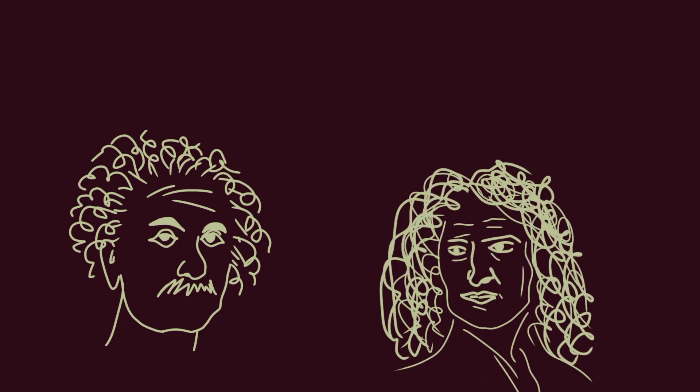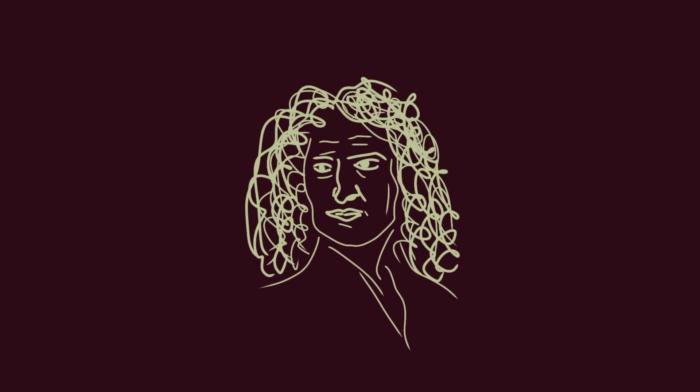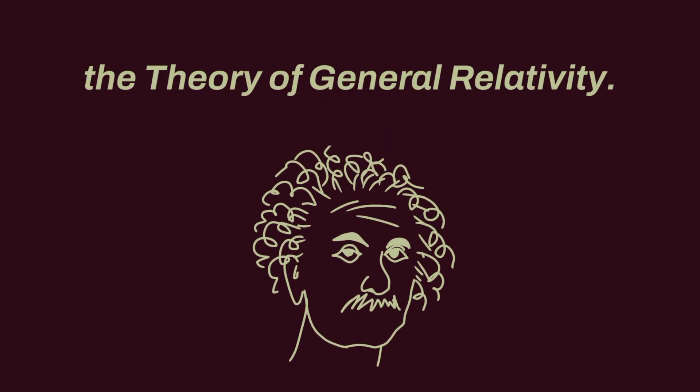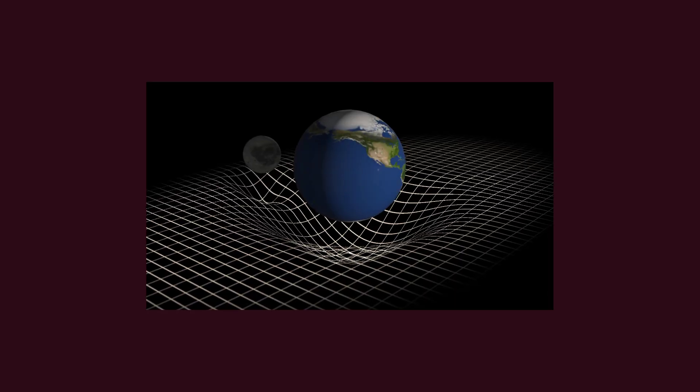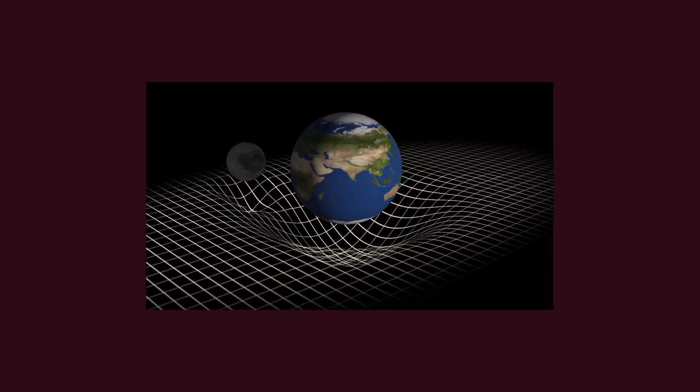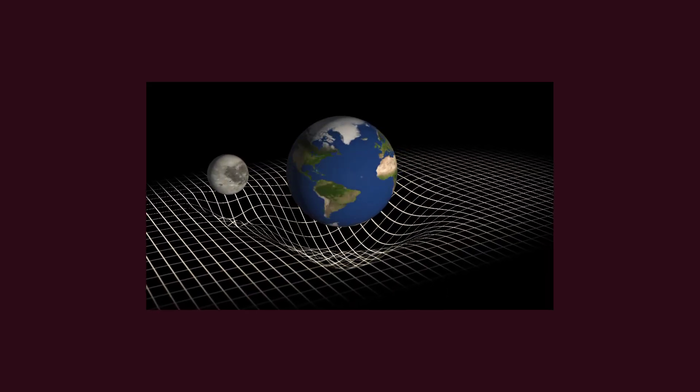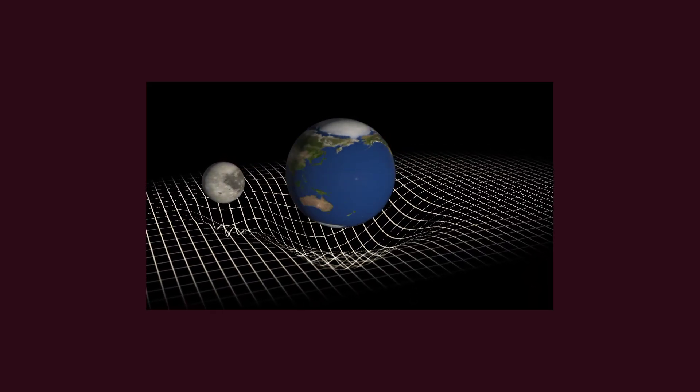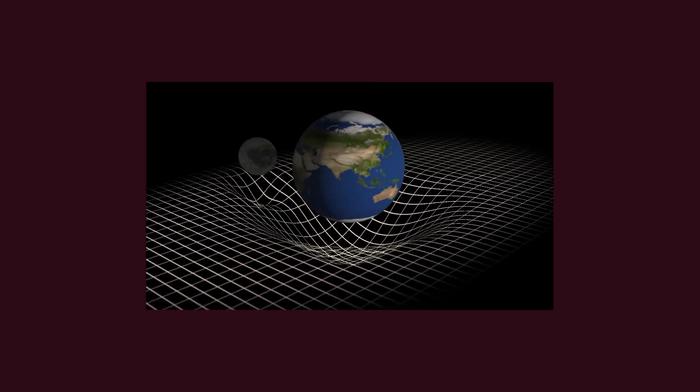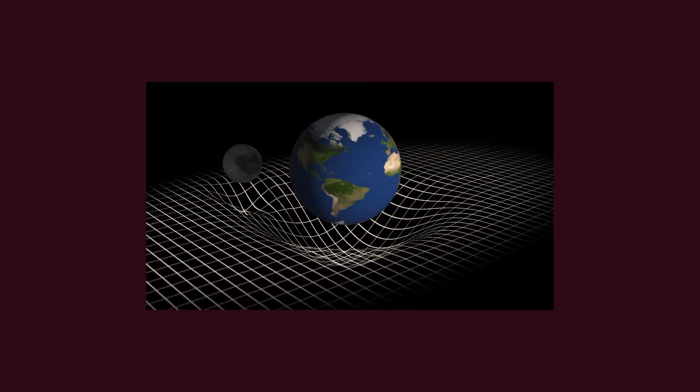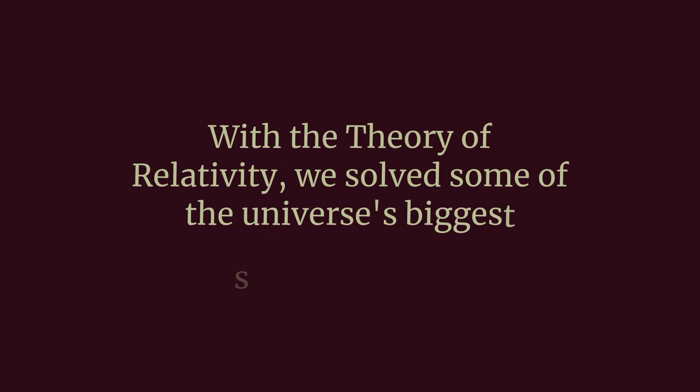But Einstein didn't stop there, he also questioned old Newton's theory of gravity. According to Newton, masses attracted each other, but how? Einstein found a different way, the theory of general relativity. According to Einstein, masses warped space-time. It's like the dent a bowling ball makes on a stretched trampoline. That dent is what creates what we call the force of gravity. The sun warps space-time, causing the Earth to orbit around it. Black holes warp space-time so much that not even light can escape from them. So what Newton called the force of attraction was actually a phenomenon Einstein described as the warping of space-time. With the theory of relativity, we solved some of the universe's biggest secrets.